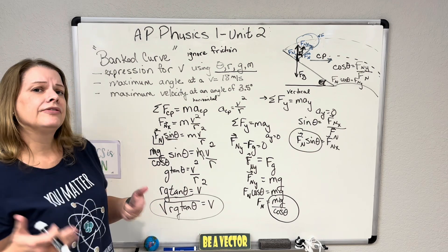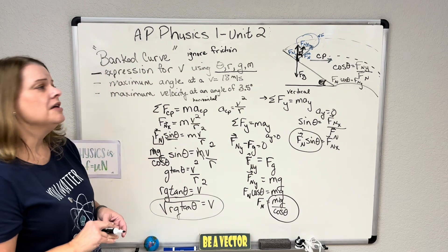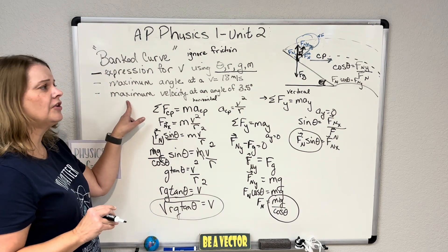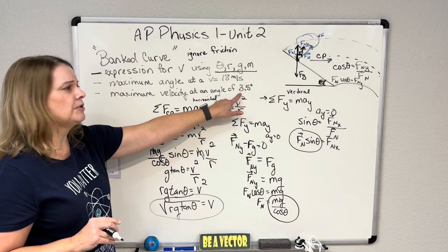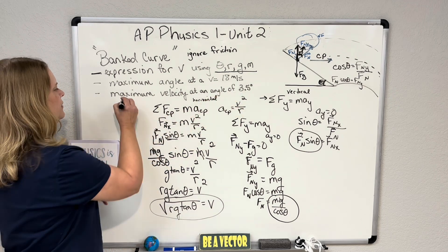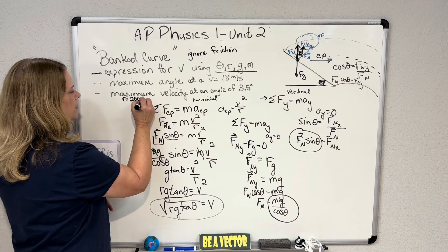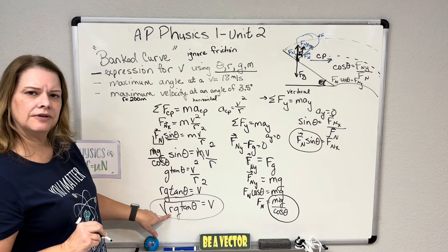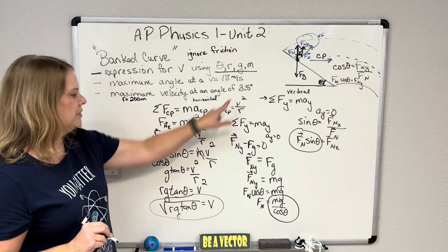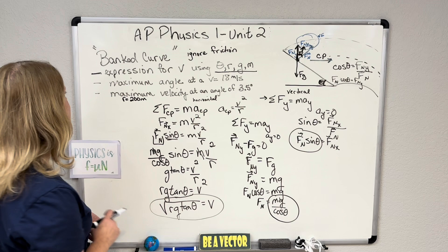They might ask instead of an expression for velocity: find the maximum velocity at a banking angle of 3.5 degrees with a radius of 200 meters. You know g is 9.81 and your theta is 3.5, so you just plug in and solve for v. That would be your maximum velocity.